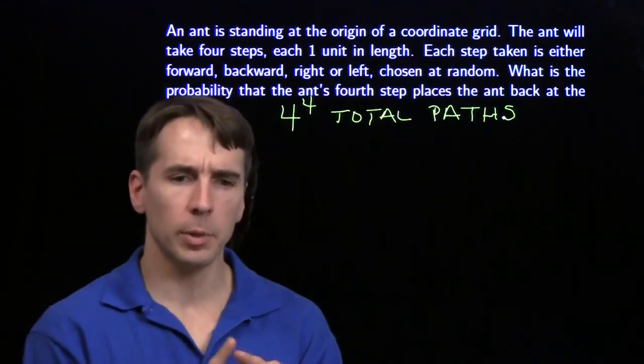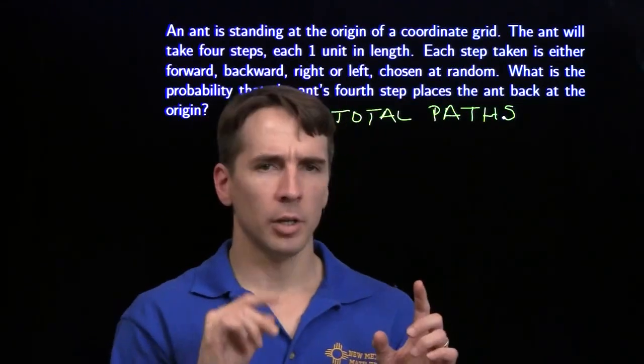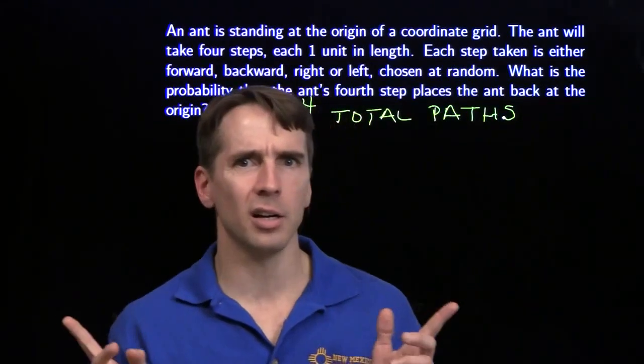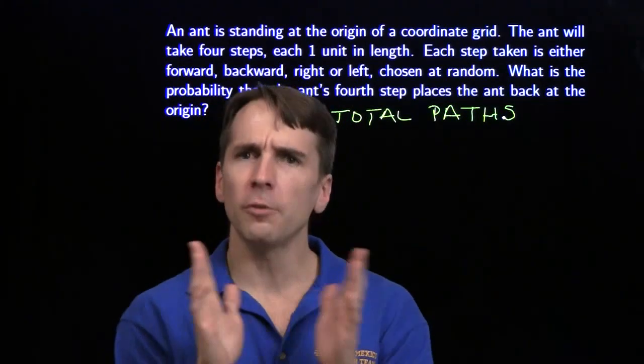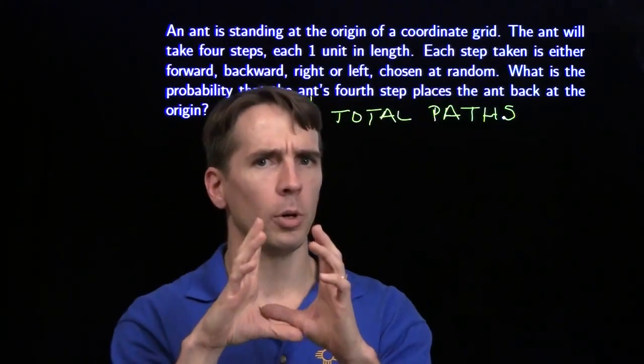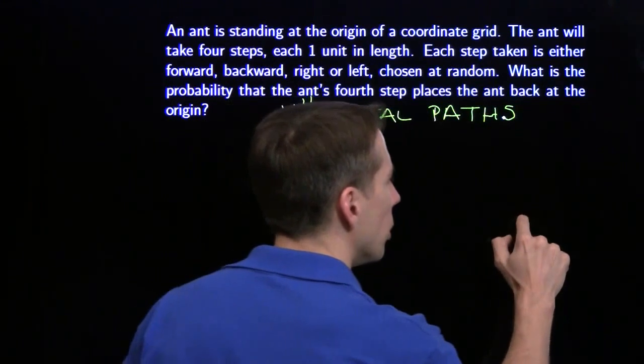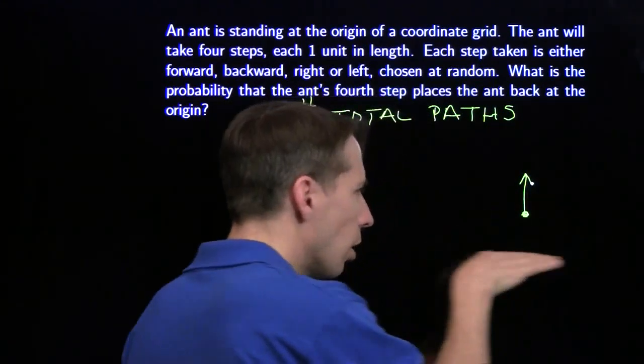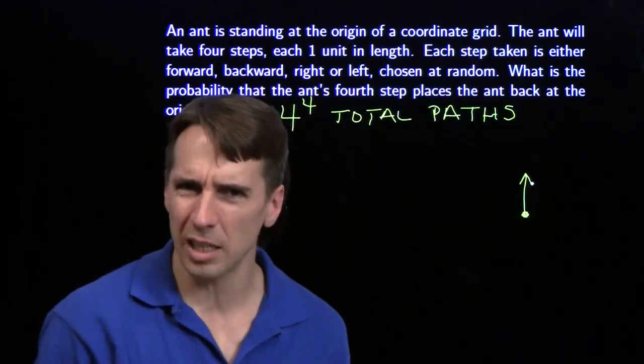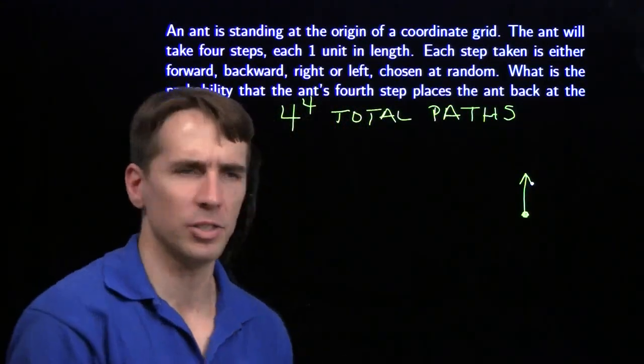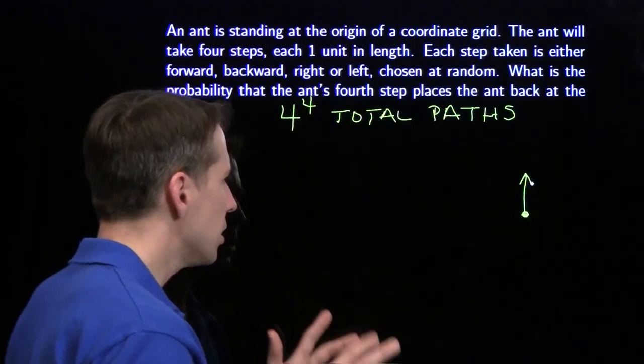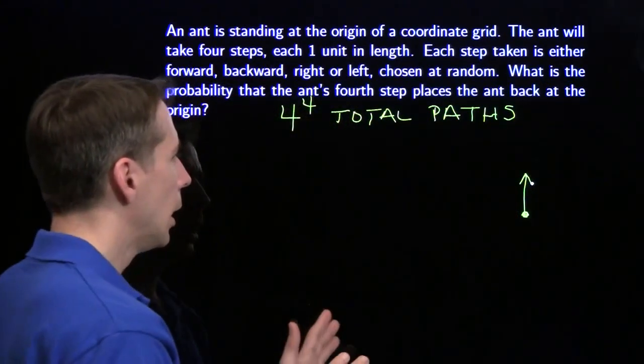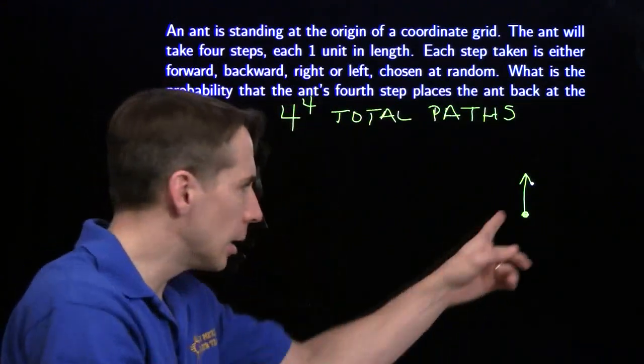One step at a time. First step, the ant can go forward, right, left, back, you know, it doesn't really matter which of those the ant does. Now, I'm just going to focus on one of them, I'm just going to focus on forward. The ant goes forward, how can the ant get back home? Now, if we start off in any other direction, it's going to be basically the same analysis, give us the same number of paths back home. Nice symmetry there. So I'm just going to focus on the 1, because the ant goes forward. How many paths will bring the ant back home?